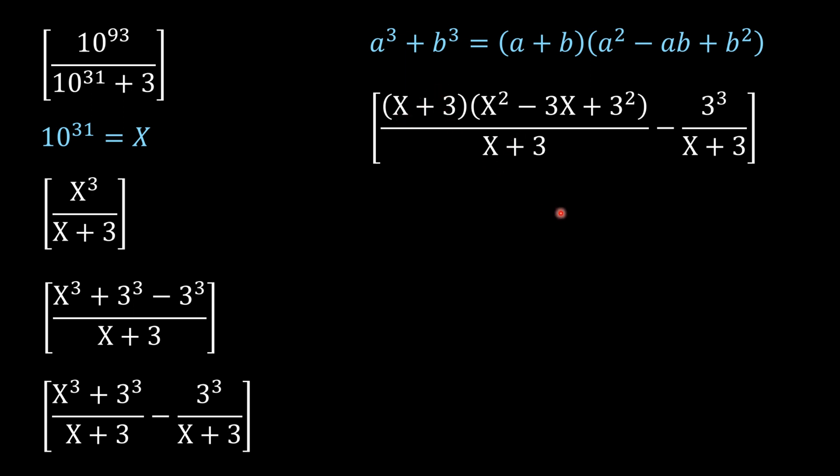So we can cancel these two values. Now if you look at this value, the denominator is gone, so the first part is just X² - 3X + 3².